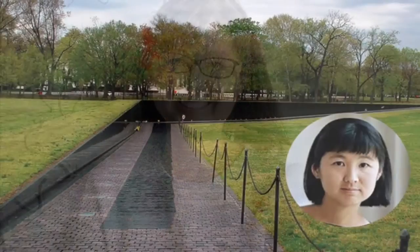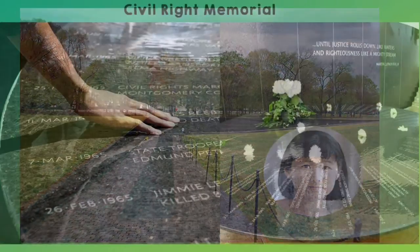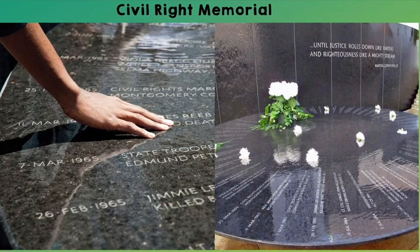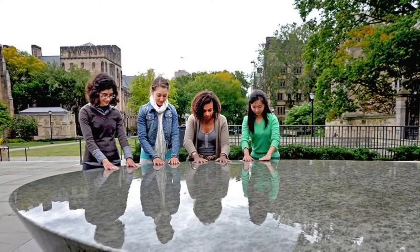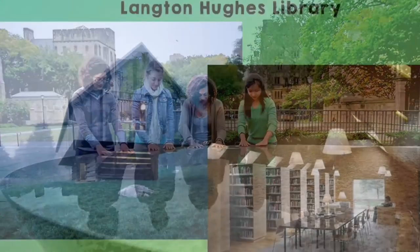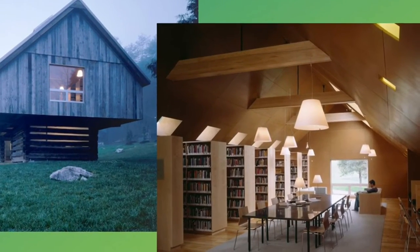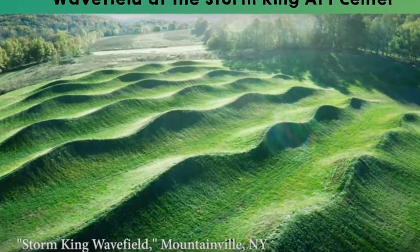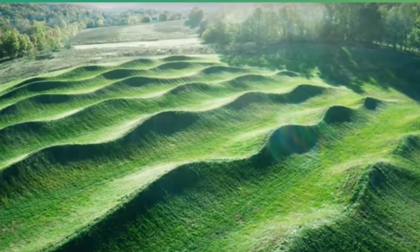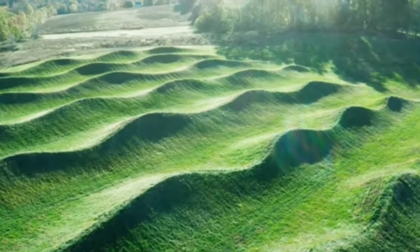Maya Lin went on to become a famous architect and artist. The wall might be Maya Lin's most famous design, but it was not her last. She designed the Civil Rights Memorial in Montgomery, Alabama, the Women's Table at Yale University, and she also designed the Langston Hughes Library — pretty cool! She also creates things using the earth, like making hills look like waves from the ocean. It's called the Wave Field.